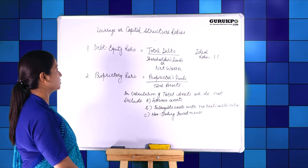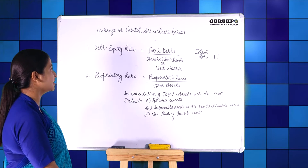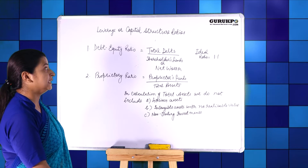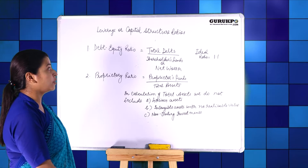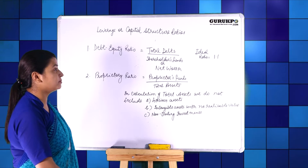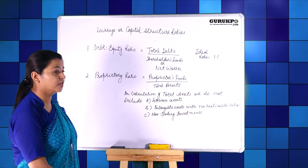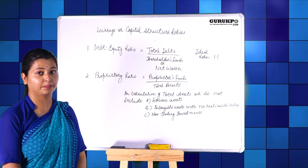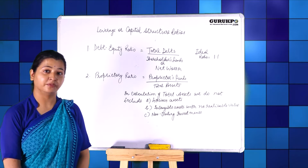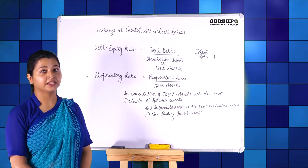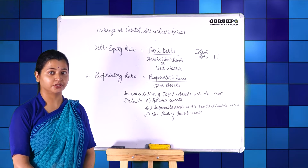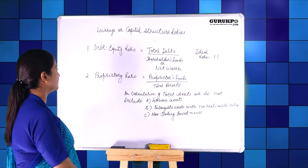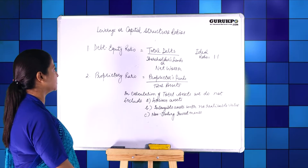Today we are going to study the topic leverage or capital structure ratios. These ratios actually determine or judge the long-term solvency position of a company — whether the company is financially sound or not. The first ratio is the debt equity ratio.